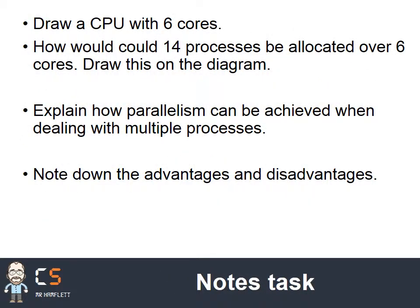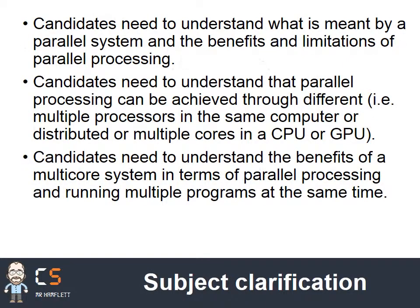Just to finish off: if you draw a CPU with six cores, think about how four processes could be allocated over those six cores and draw a diagram to represent that. Explain how parallelism can be achieved when dealing with multiple processes, and note down those advantages and disadvantages. Subject clarification: candidates need to understand what is meant by a parallel system and its benefits and limitations; that parallel processing can be achieved through multiple different ways such as multiple processes on the same computer or distributed on multiple cores; and the benefits of a multi-core system in terms of parallel processing and running multiple programs.